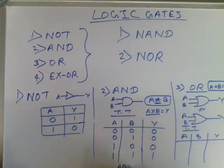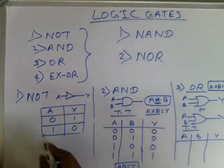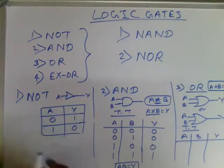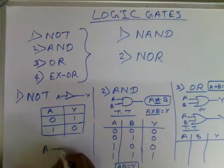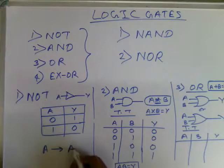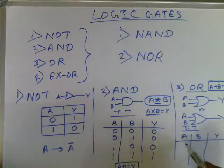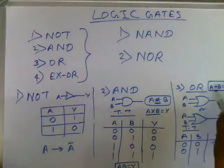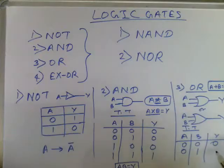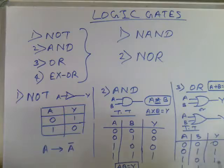For NOT gate, the equation is: A bar equals Y. The OR gate truth table: input 0 0 gives output 0; input 0 1 gives 1 (0 plus 1); input 1 0 gives 1 (1 plus 0); input 1 1 gives 1.